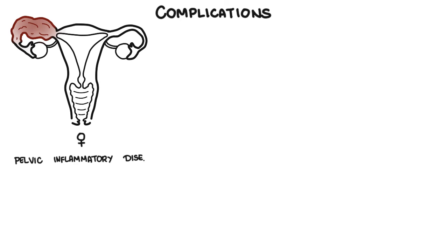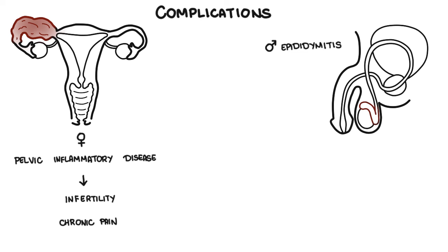Complications of chlamydia include pelvic inflammatory disease in women. Chlamydia can ascend to the upper reproductive tract — the uterus, fallopian tubes, and ovaries — and cause this condition. Pelvic inflammatory disease is an important health issue, as it can lead to infertility and chronic pain. Other complications include epididymitis in men and Reiter's disease, which causes joint pain and swelling triggered after an infection.